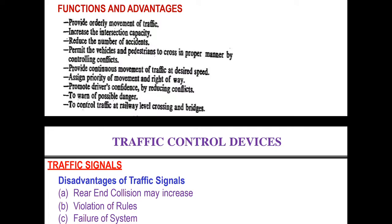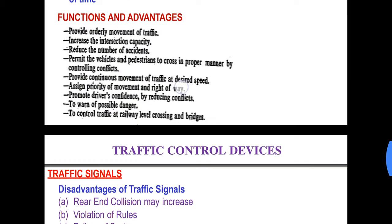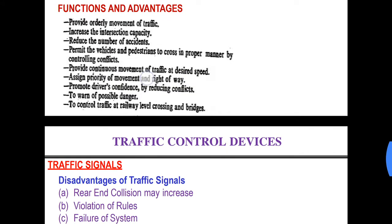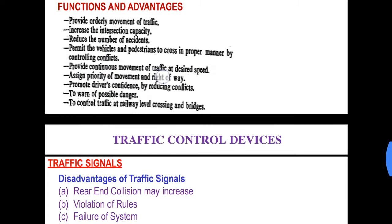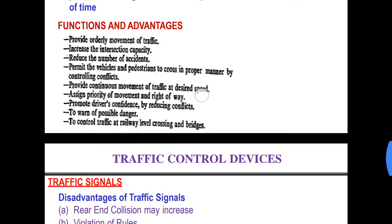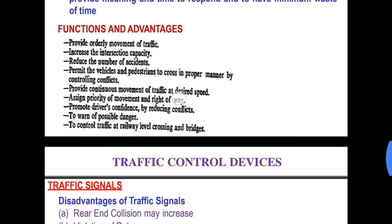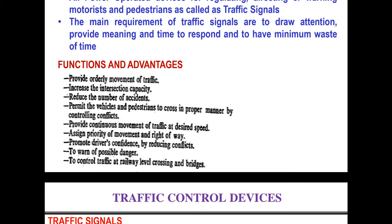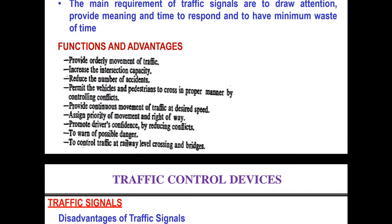Traffic signals assign priority of movement and right of way. If there is movement in more than one direction, then for some particular time the priority may be given to one direction, and later on to the other directions. They also provide the right of way to travel.